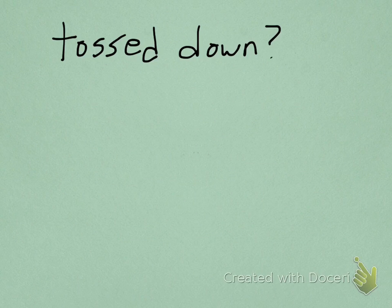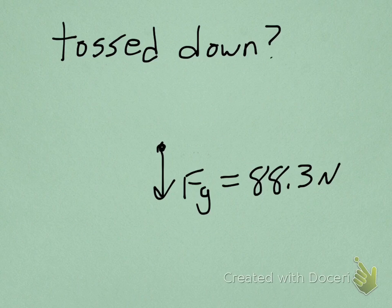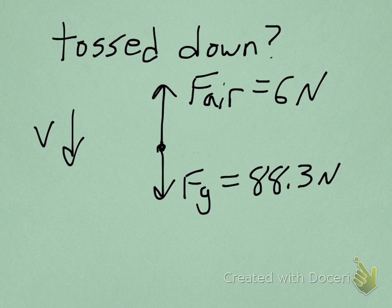What happens if we threw the ball downwards? So now we have force of gravity down, same amount, 88.3 newtons. Except now the velocity is down, so the air resistance has to oppose that motion. It has to go against it. So the air resistance is up. F air is six newtons, it's up this time. And we want to know the acceleration.